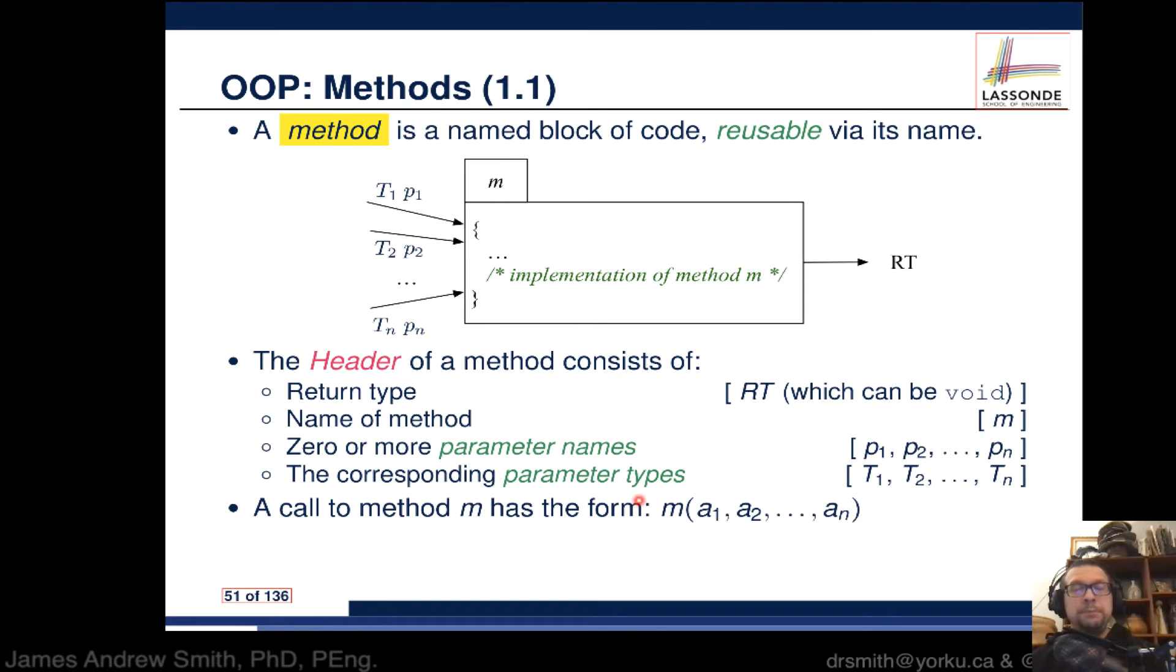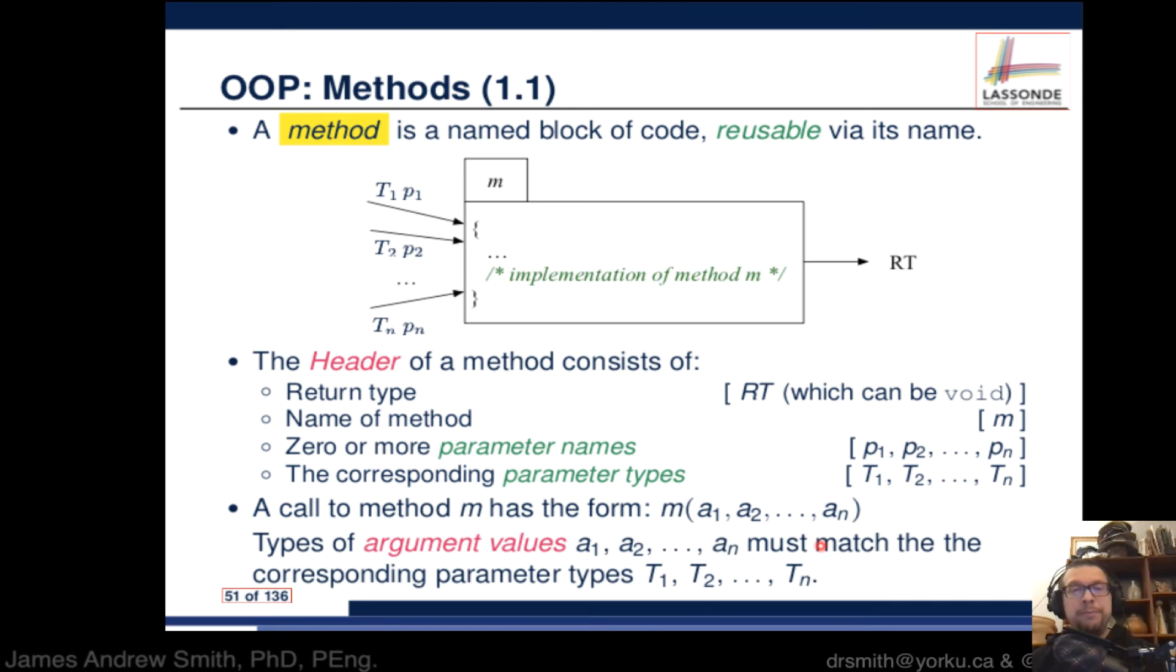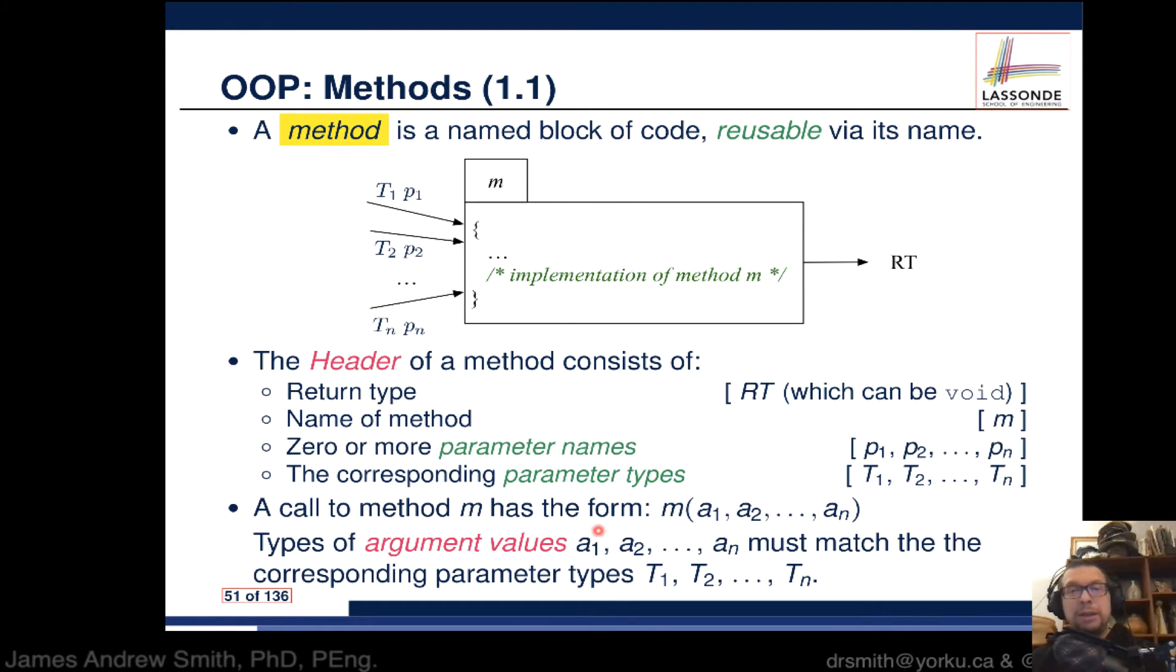A call to a method has the form: method name followed by parentheses. Inside the parentheses you have input arguments - you can have none, one, two, or n arguments. The types of these arguments (a1, a2, etc.) must match the corresponding parameter types. Parameters are how it's defined, arguments are how it's used, but they're basically the same thing.